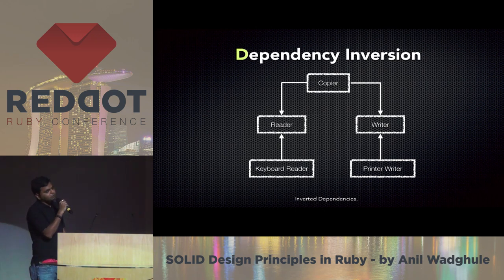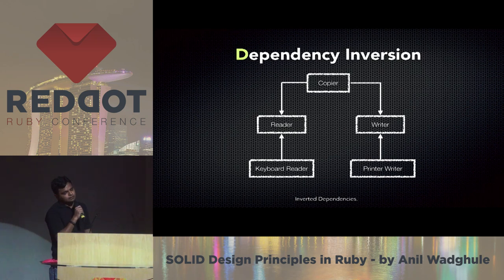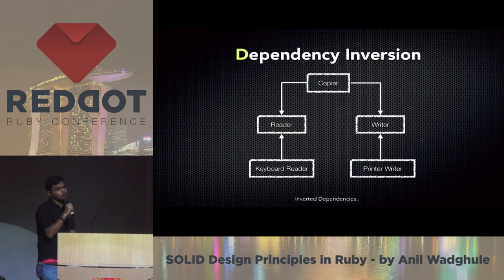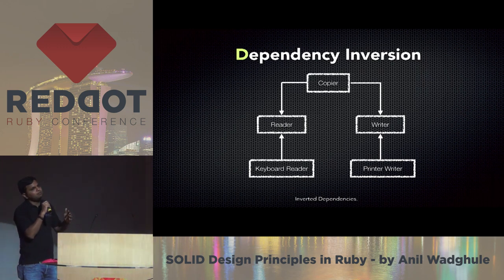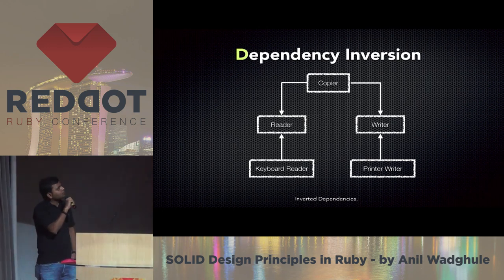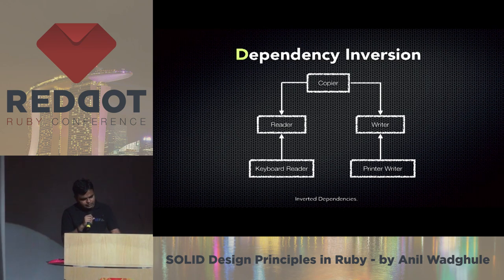Both reader and writer depend on these two abstractions, and details depend on abstractions — this is how we invert dependencies. A common pattern to implement this is dependency injection. This can be abstract, but you can have a common contract or abstraction — like in REST services where we write contracts rather than depending on actual implementation. Following this principle makes your code very clean and easy to explain.